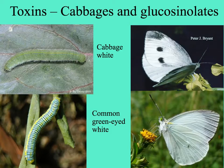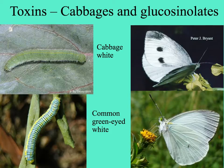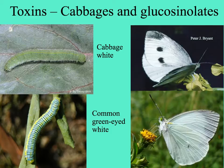Here are temperate and tropical cabbage white butterflies that cue in on glucosinolates — compounds found in plants like cabbage and Brussels sprouts. The lower image shows the common green-eyed white, which we even have here in South Florida.